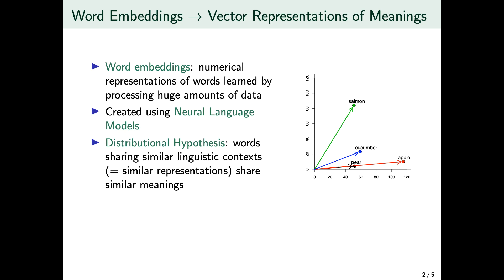Even though those methods are extremely complex, they are still based on a very simple and strong hypothesis that was defined in the 60s — the distributional hypothesis. This hypothesis suggests that words that share similar linguistic contexts also share similar meanings.